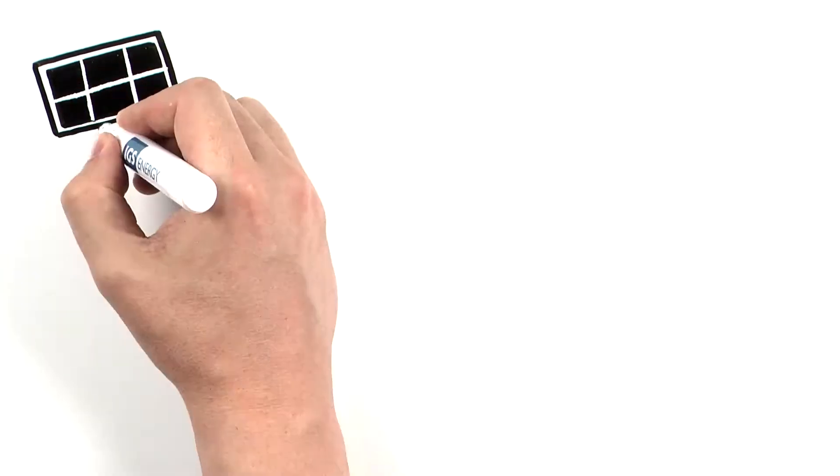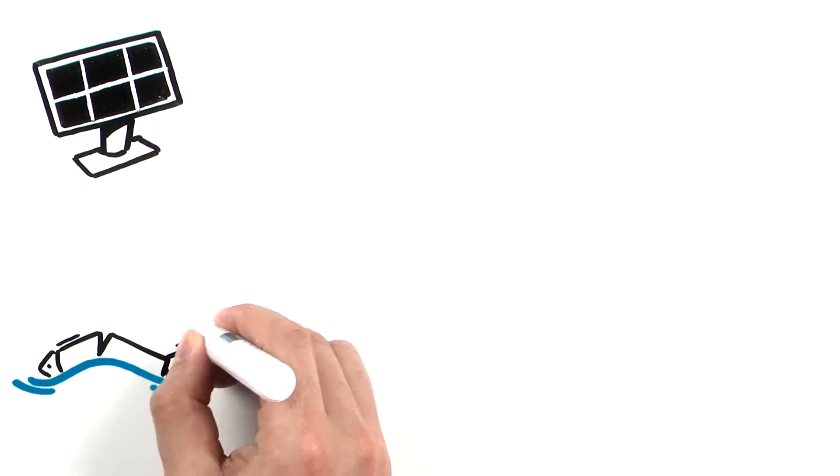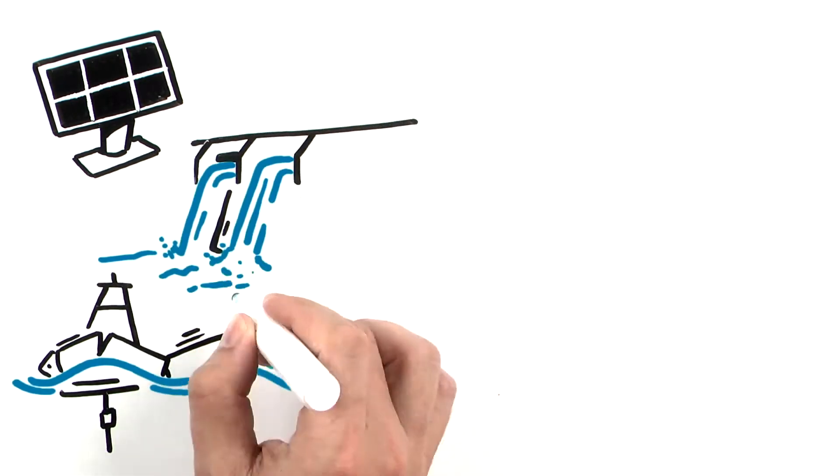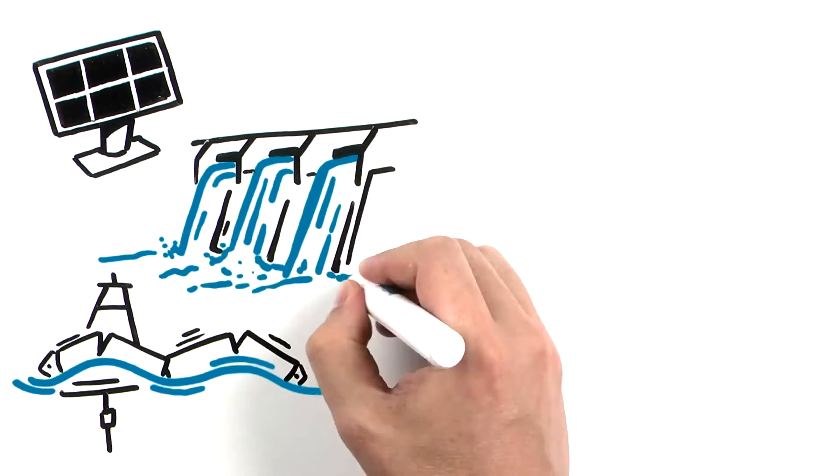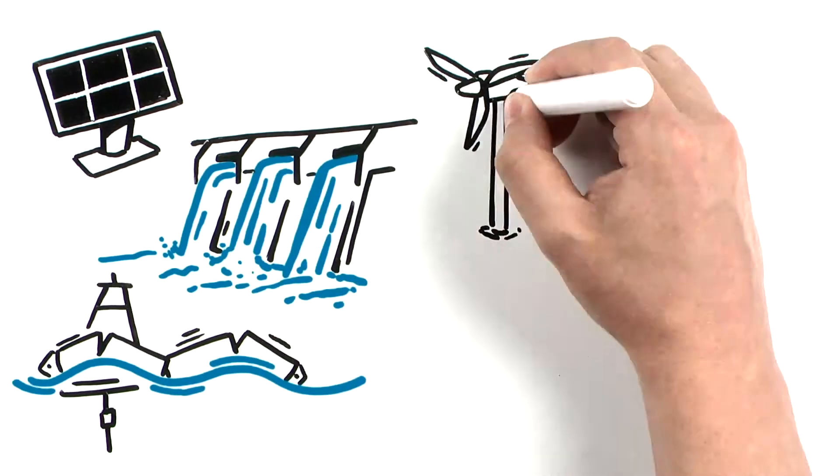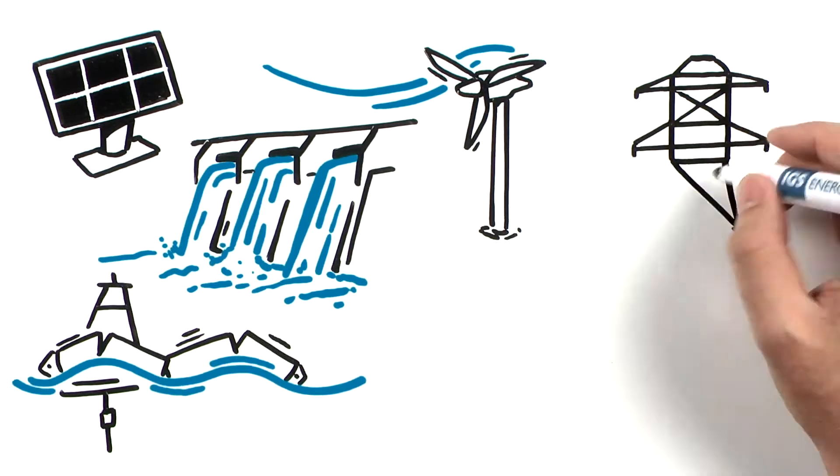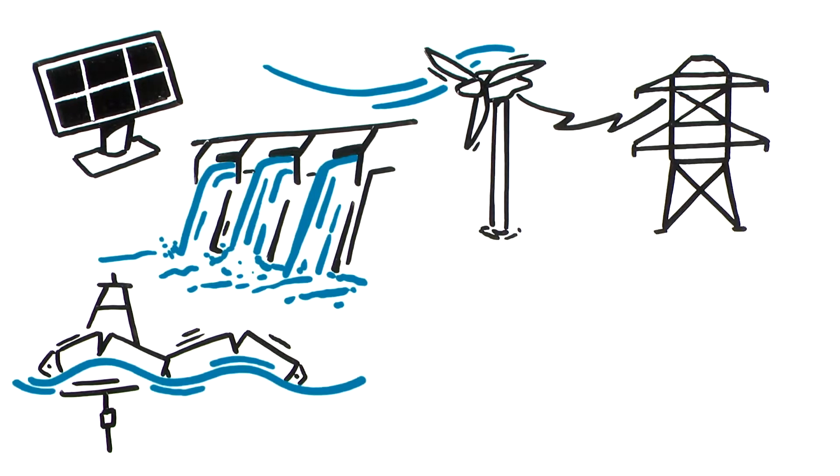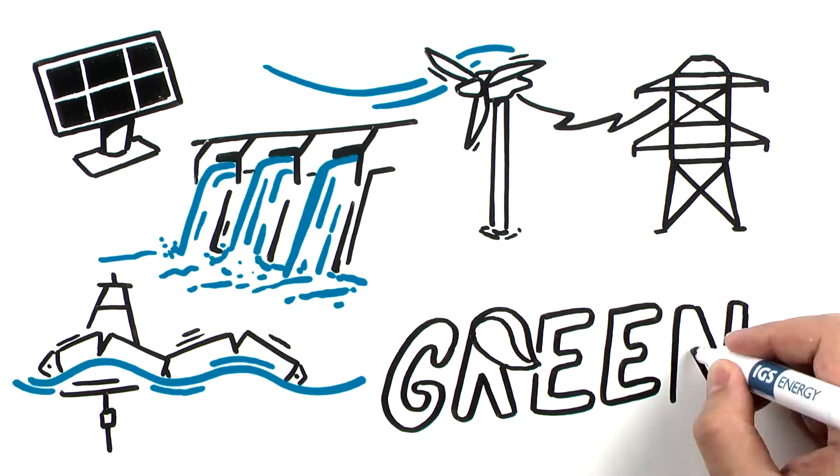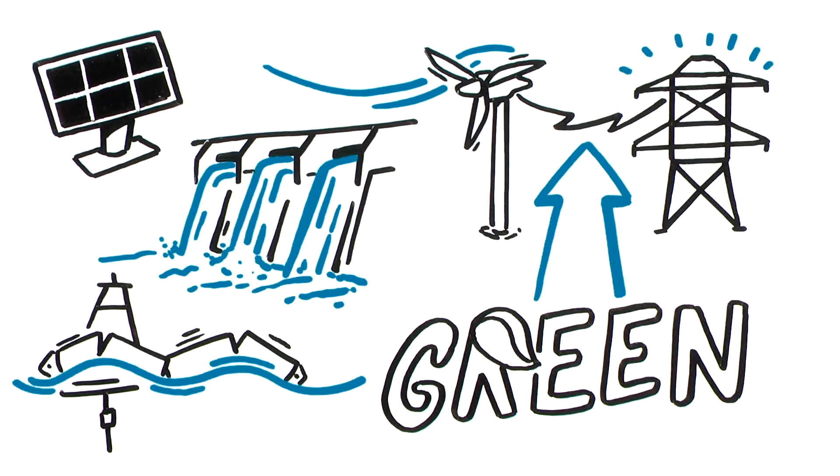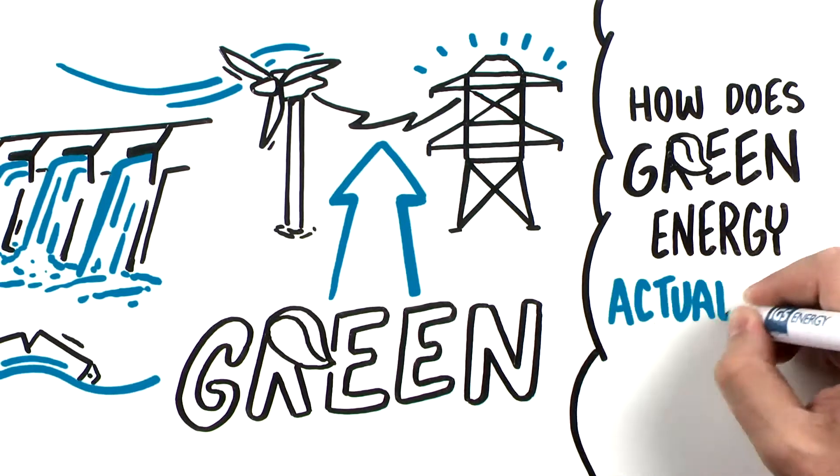Consumers and businesses alike are placing more focus on sustainable practices and environmentally friendly products and services. The energy industry is no exception. With an emphasis on providing products designed to help protect the sustainability of the planet, IGS provides a green electricity product that allows consumers to use their energy more responsibly. But how does green energy actually work?